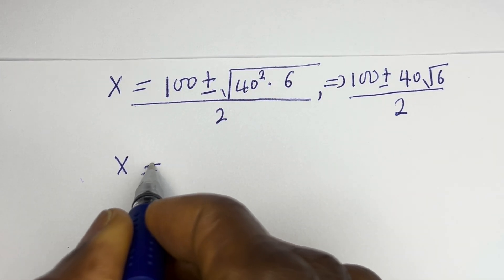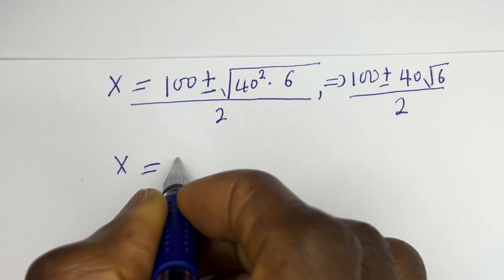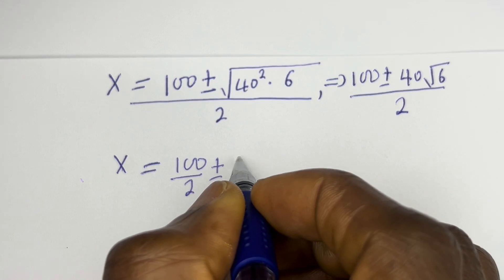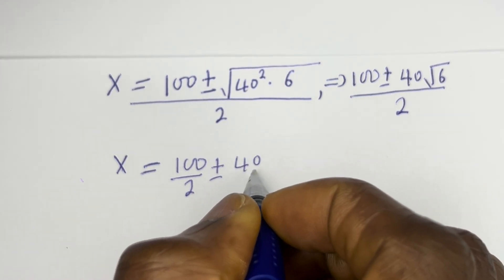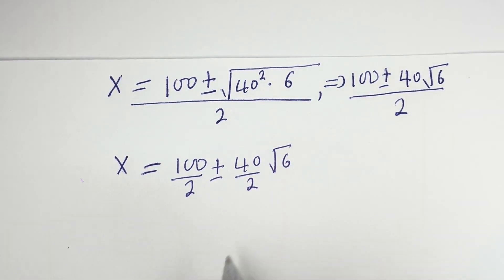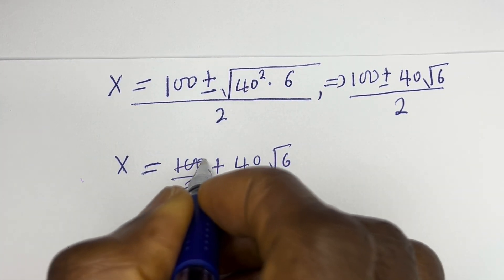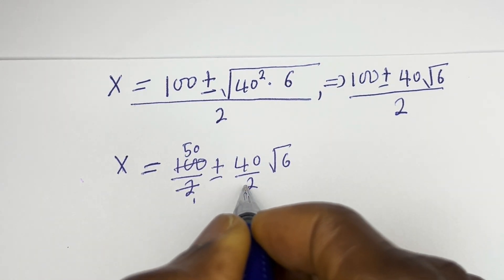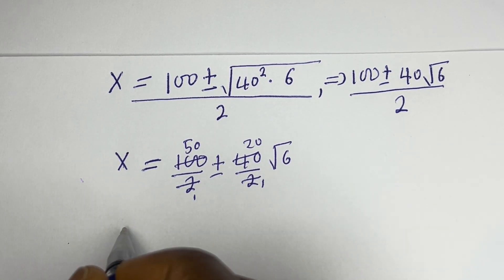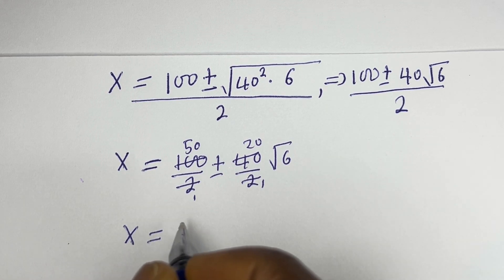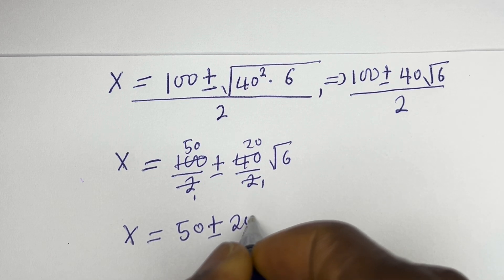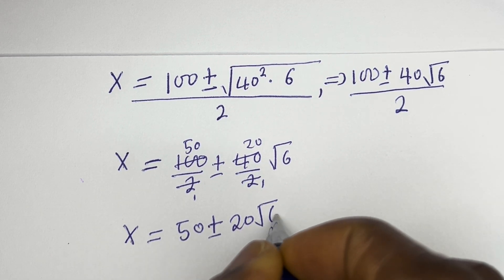So x is equal to 100 divided by 2, plus or minus 40 divided by 2 times root 6. That simplifies to 50 plus or minus 20 root 6.